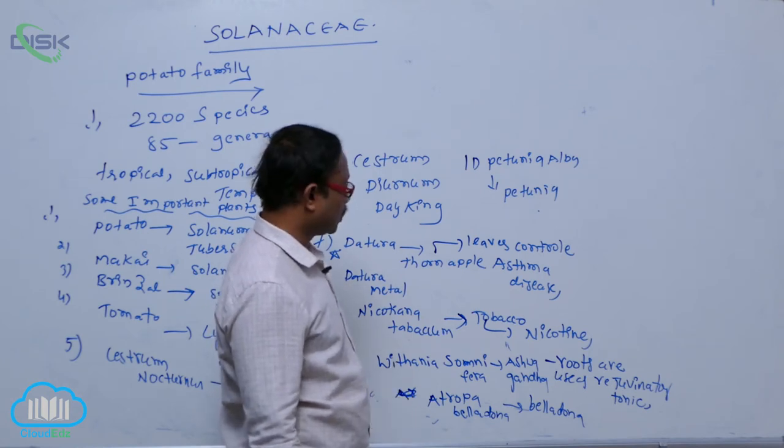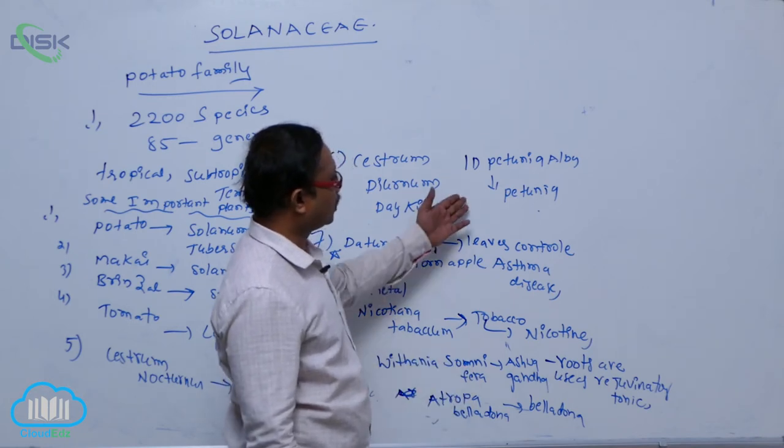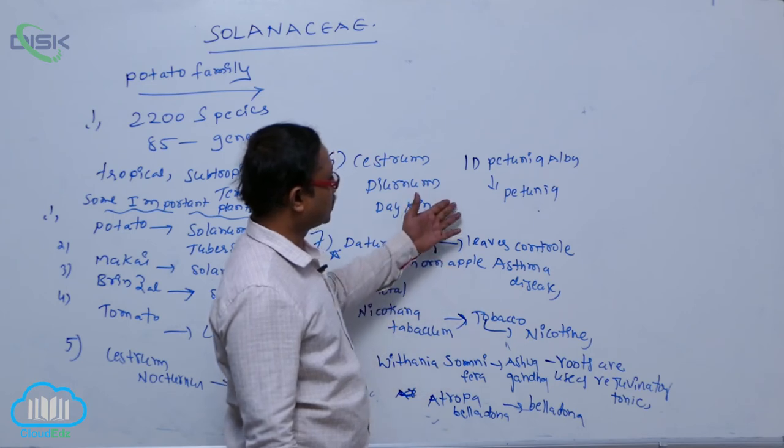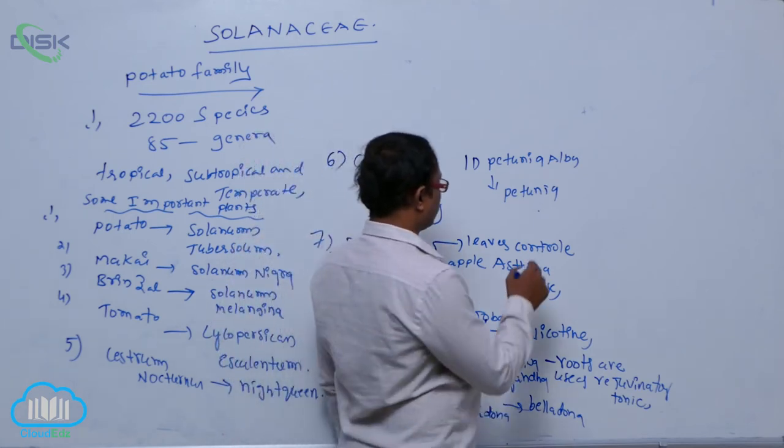And Atropa Belladonna, it is controlling of heart problems. And Betunia Alba, it is known as an ornamental plant.